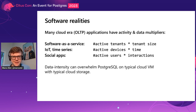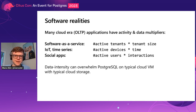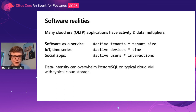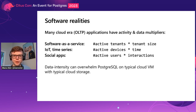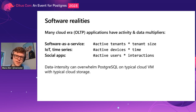There's also the software realities. Nowadays a lot of transactional applications — like hospital administration or airline booking systems in the past — were tied to something going on in the physical world, and there's only so many planes or patients. But nowadays you can have applications that are almost unbounded in terms of their growth. Software as a service applications that can quickly grow in the number of tenants, IoT applications with more and more devices, social applications with more and more interactions — this kind of data intensity can overwhelm Postgres on typical modern hardware.